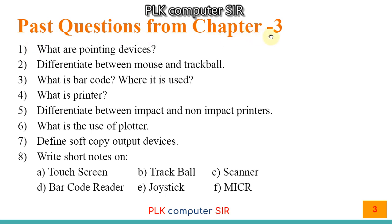Past questions from Chapter 3: number one, what are pointing devices? Number two, differentiate between mouse and trackball. Number three, what is barcode and where it is used? Number four, what is a printer? Number five, differentiate between impact and non-impact printers. Number six, what is the use of plotter? Number seven, define soft copy output devices. Number eight, write short notes on: touch screen, trackball, scanner, barcode reader, joystick, and MICR.